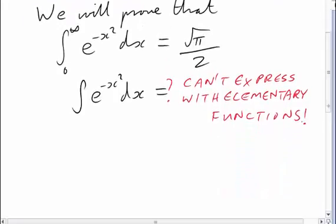First of all, I don't really want to keep writing out this integral, so let's give it a name. Let's write I equals integral 0 to infinity e to the minus x squared dx.